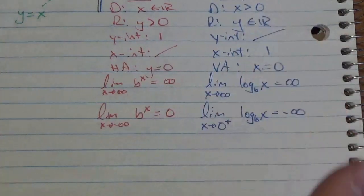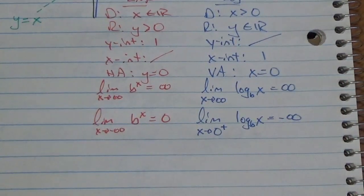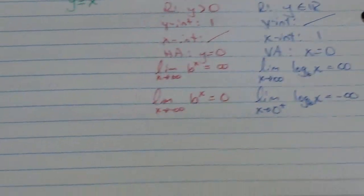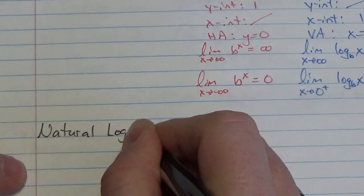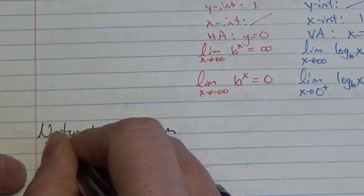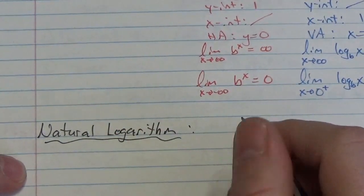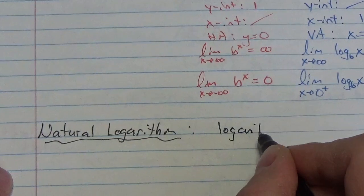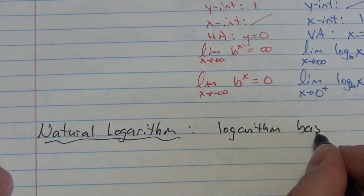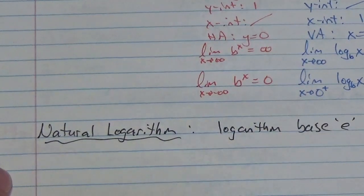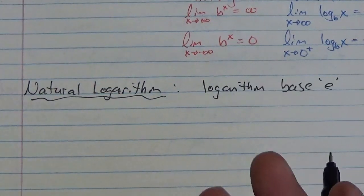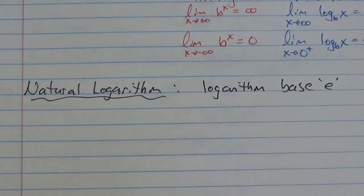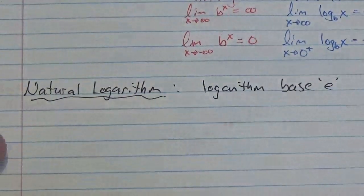Now that we've talked about logarithms and explored some of their properties, what I want to do is introduce you to a good friend of mine — the natural logarithm. This is the logarithm base e. We introduced this special number e in a previous lesson as the base of the exponential function. Now we're going to find the inverse of that function, and it's going to become a very special logarithm.